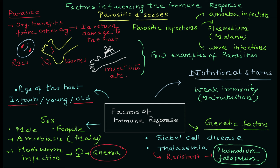To summarize, the factors responsible for the immune response against parasitic infections are: first, age of the host; second, gender or sex; third, nutritional status; fourth, genetic factors. All these factors, along with many others, can regulate the immune response and your susceptibility to parasitic infections, which can vary accordingly.